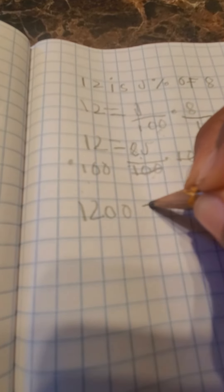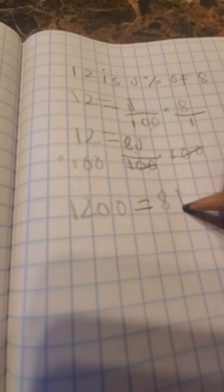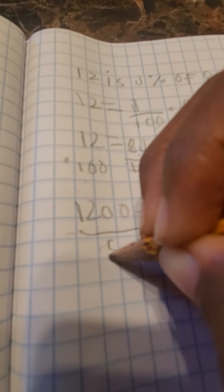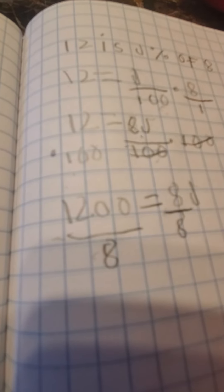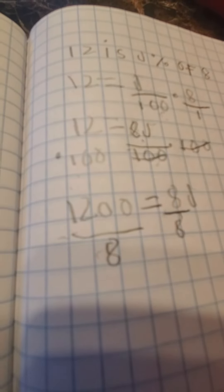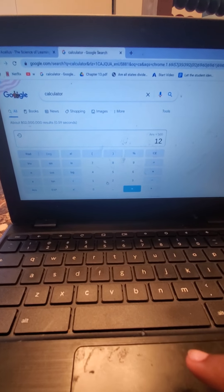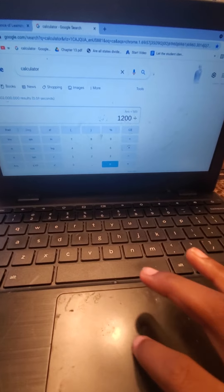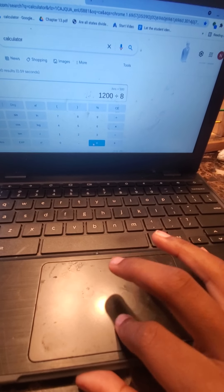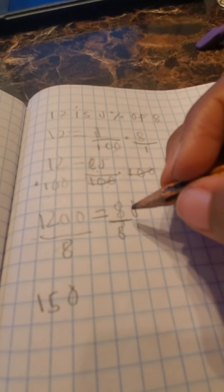So now you would divide both sides by 8. Now it's the time you can get out your calculator. 1200 divided by 8, J is 150.